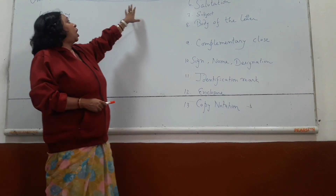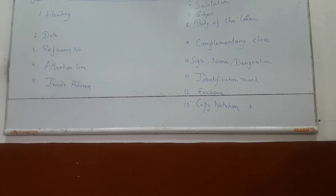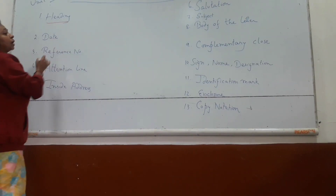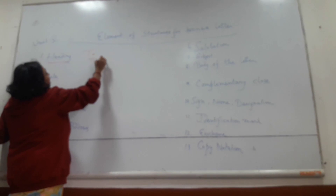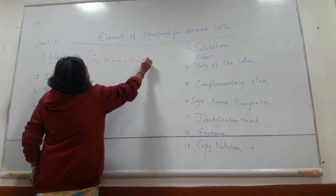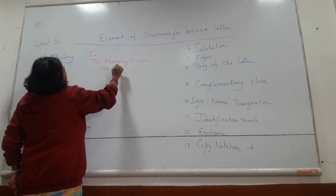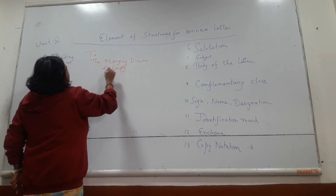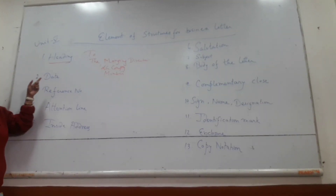This is about the business letter from unit 5. There are 13 points that we will have to write as a form of the business letter. The first point is the heading. In the heading we will have to write the addressing, like 'To the Director, to the Managing Director, LG Company, Mumbai.' So in this way we will have to write the heading. This is the very first point.